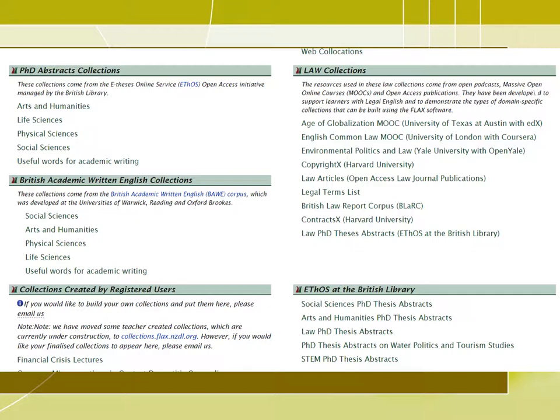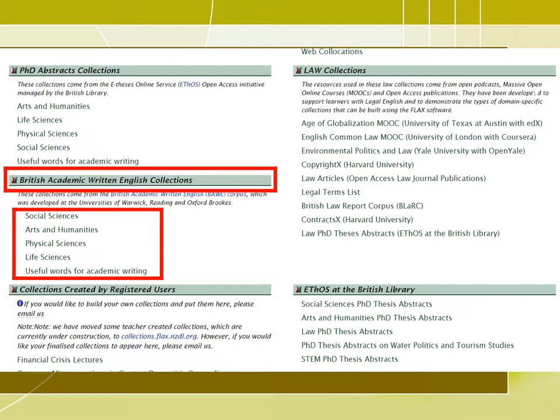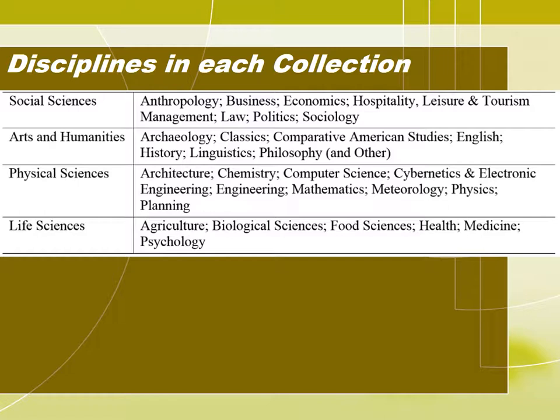The third collection I would like to introduce is the British Academic Written English Collections. This collection offers rich resources for developing academic English. There are five collections within the BAWE collections: social sciences, arts and humanities, physical sciences, life sciences, and useful words for academic writing. Each collection contains full authentic academic texts from different disciplines and types of writing, such as case studies, literature reviews, proposals, problem solution papers, and so on.